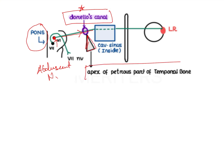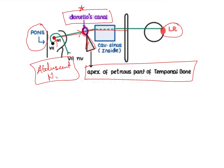The apex of the petrous part of the temporal bone forms Dorello's canal, through which the abducent nerve passes. It then goes inside the cavernous sinus and supplies the lateral rectus muscle of the eye. This is the course, which should be well understood from this explanation.